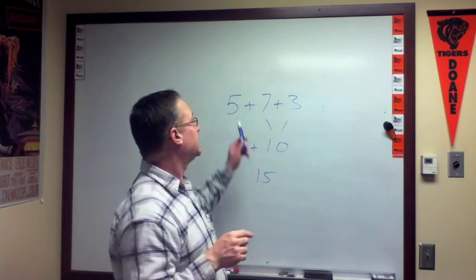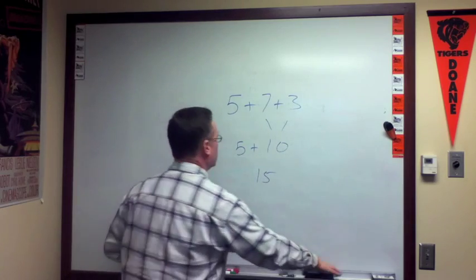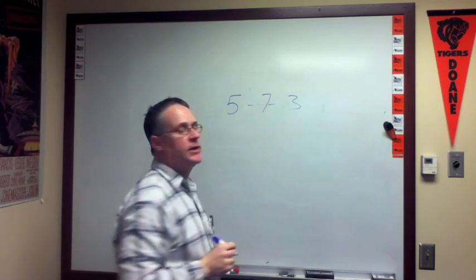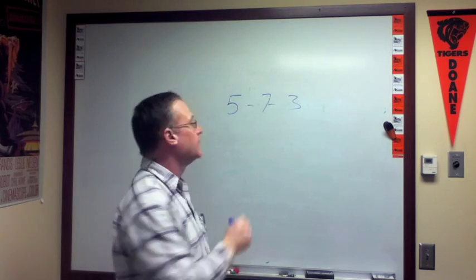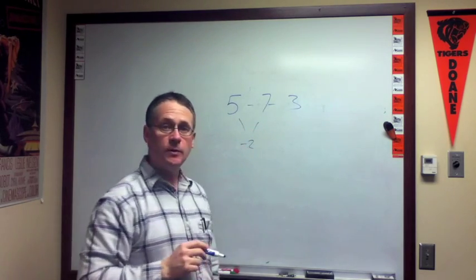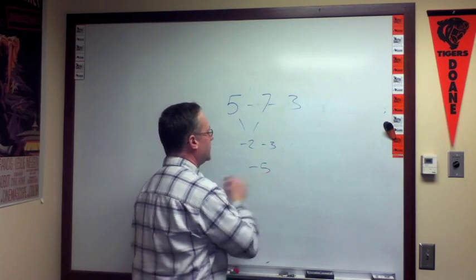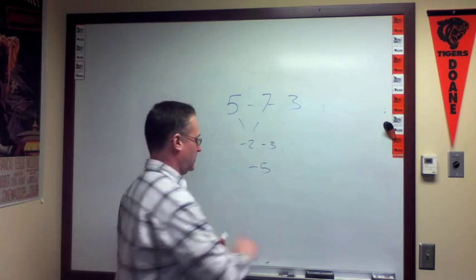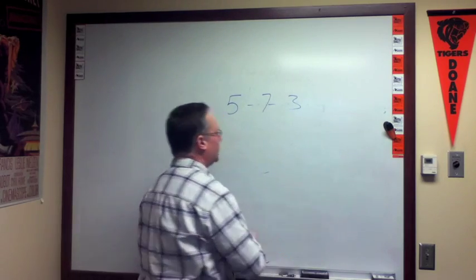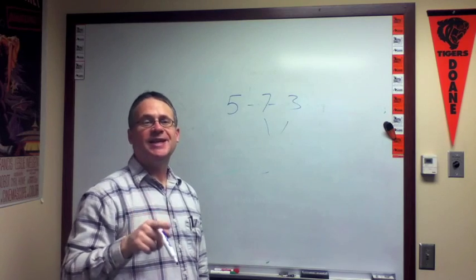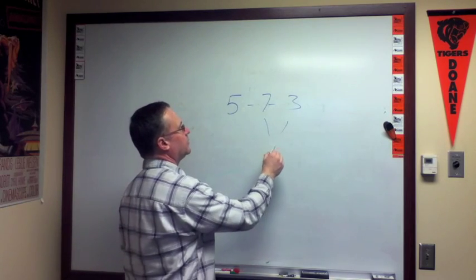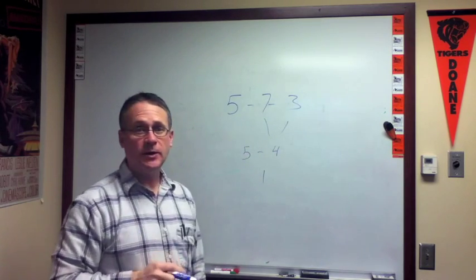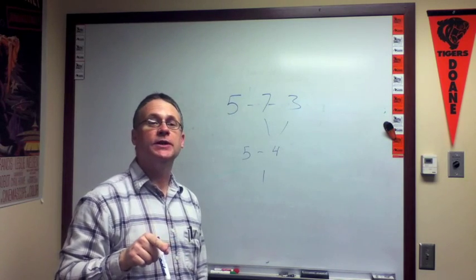But what if I went and replaced the addition with subtraction instead? So 5 minus 7 minus 3. Let's do the same thing. 5 minus 7 first is minus 2, minus 3 more is minus 5. So if I do the first subtraction first, I end up with negative 5. On the other hand, if I do the second subtraction first, I end up with a 4 here, 5 minus 4 or 1. So clearly, the order matters if I'm using subtraction.